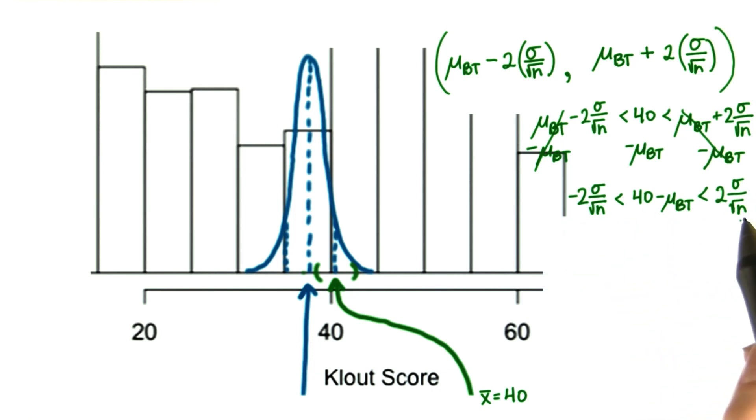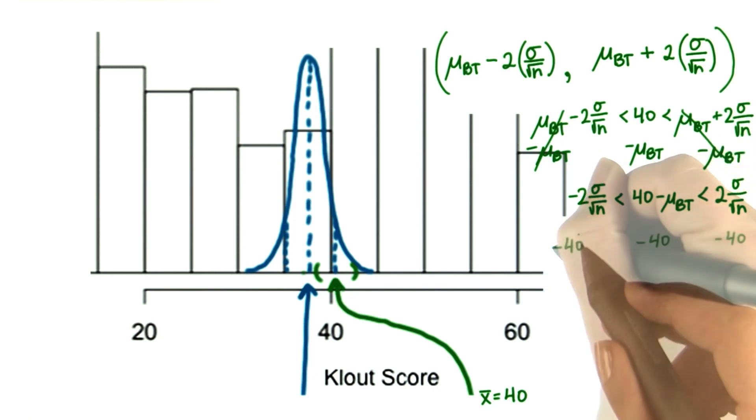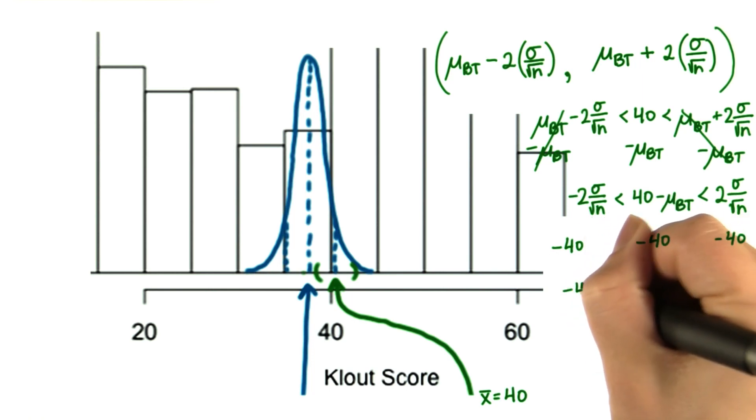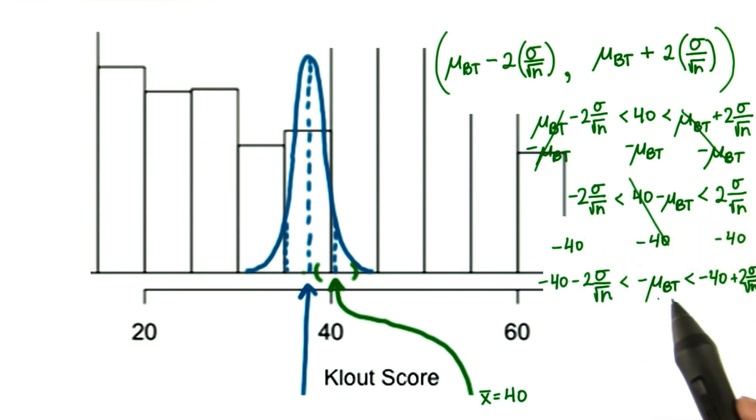Now we'll subtract 40 from all three sides of the equation. So here we get negative 40. And now the last thing we need to do is to make this positive. So we'll multiply by negative 1 on all three sides.